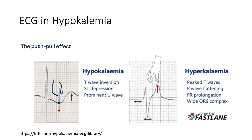This is what we call the push-pull effect. In hypokalemia, you're pushing the T wave down, giving T wave inversion, ST depression, and a prominent U wave. In hyperkalemia, you have the famous characteristic peaked T waves, the P wave is flattened, the PR interval is prolonged, and this leads to wide QRS complexes. Keep these two images in mind: U waves in hypokalemia, peaked T waves in hyperkalemia.